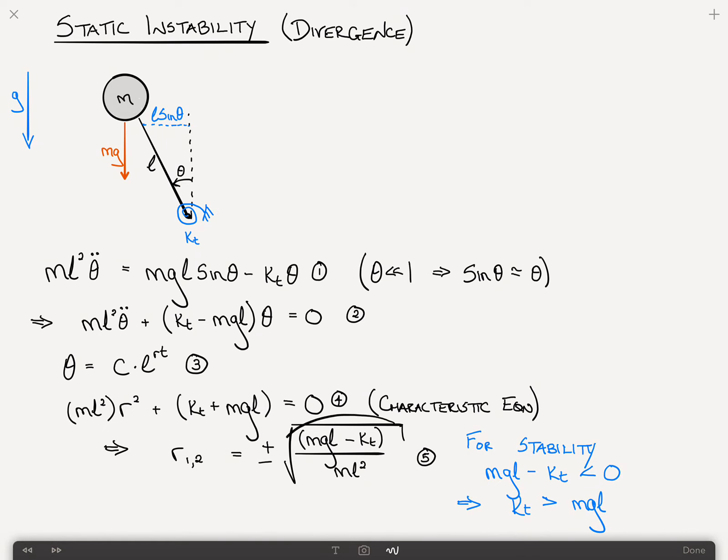Well, what if kt is less than m g l? If kt is less than m g l, then this becomes a real number, because the numerator is positive. That's a real number, which means the roots are both real and different, because one is positive, one is negative. And theta, we know theta of t, is equal to c1 times e to the r1t, plus c2 e to the r2t.